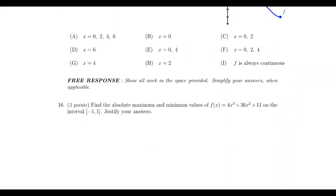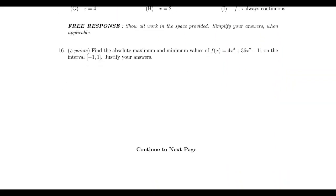Let's move on to the free response section. The first question, question number 16, is going to be an extreme value type problem — the extreme value theorem, which told us that a continuous function on a closed interval always has an absolute maximum and absolute minimum. There was a question like this in the free response section on exam number four. No variability here: question number 16 will be an extreme value problem — find the absolute maximum and absolute minimum of a continuous function on a closed interval.